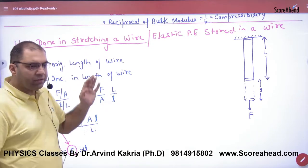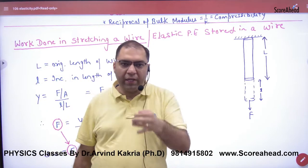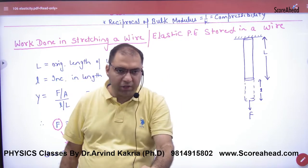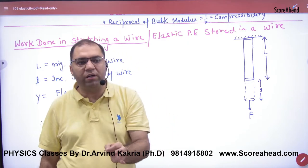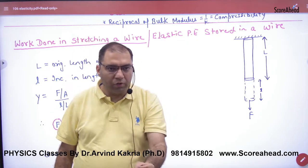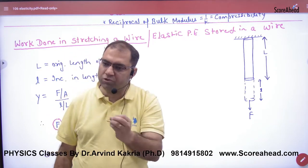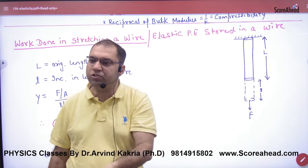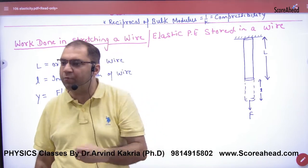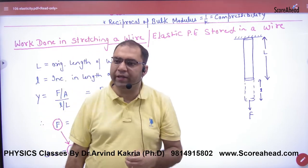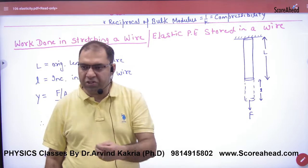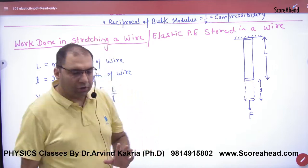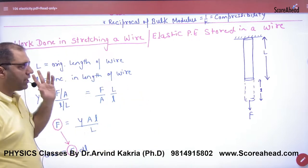The topic is work done in stretching a wire. We will take an elastic wire and pull it. When I pull the elastic wire, work is done, and energy will be stored in the elastic wire in the form of potential energy. So we have to derive an expression for potential energy or work done in stretching a wire — also called elastic potential energy stored in a wire.